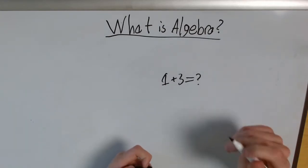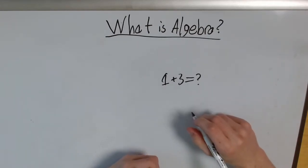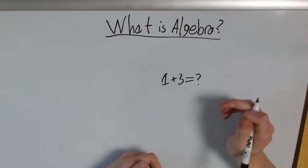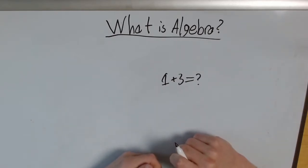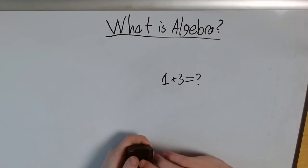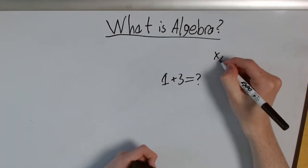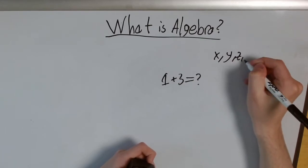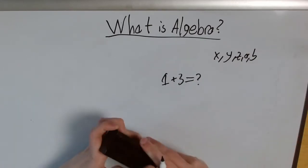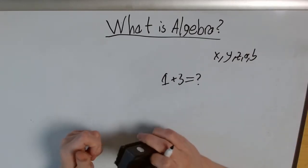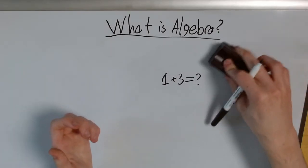Well, algebra is all about dealing with unknown quantities. We use symbols to represent these unknown qualities. In mathematics, that's called a variable. Usually, we use letters: X, Y, Z, A, and B, and all the letters in the alphabet to represent these variables or unknown quantities.